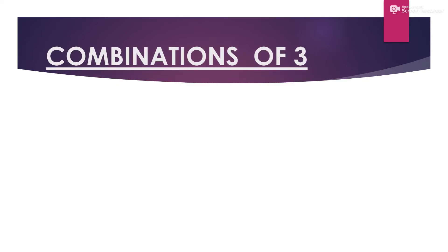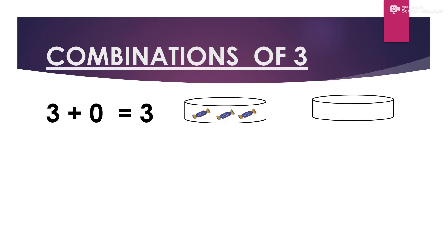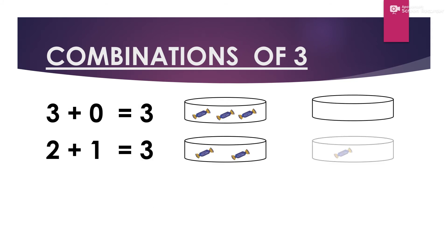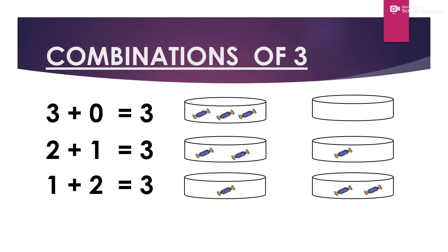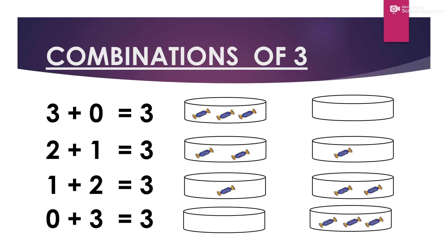There are four ways to make the combinations of 3. 3 and 0 makes 3. 2 and 1 makes 3. 1 and 2 makes 3. And also 0 and 3 makes 3.